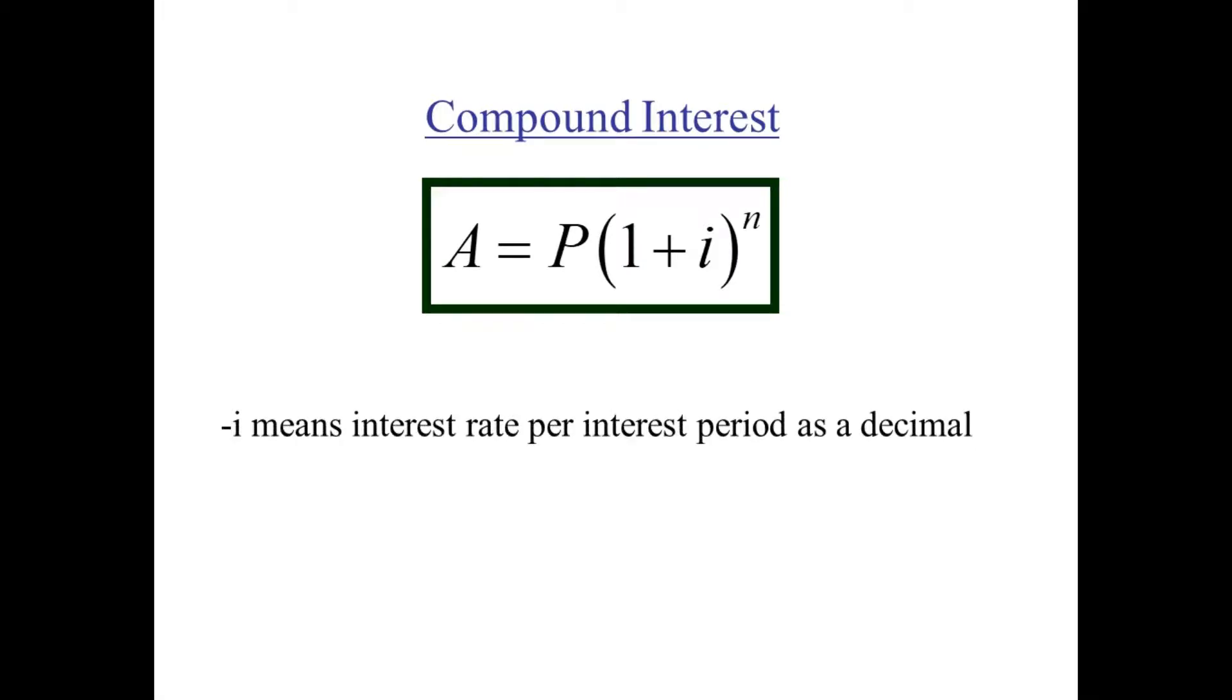So we know what A stands for. We know what P stands for. I is the interest rate not per year, but the interest rate per interest period. So if we were compounding every month, I would be the interest rate per month. That would be a twelfth of the annual rate. And N is the number of interest periods that pass by during the entire life of the investment. So we know what A, P, I, and N stand for in the compound interest formula.